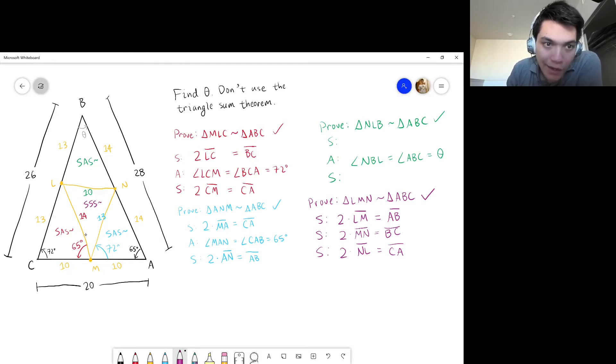Now, side LM corresponds to side AB, and side MN corresponds to side BC. So, what's the angle between AB and BC? Well, that's just theta. So, that means that this angle down here has to also be equal to theta.